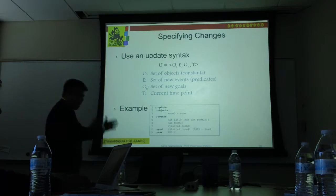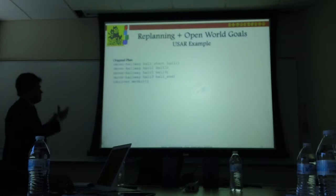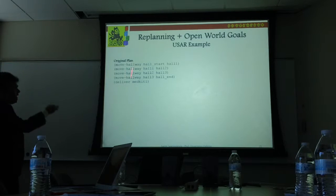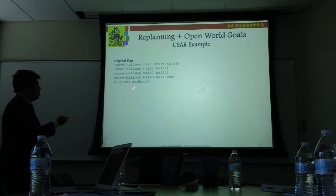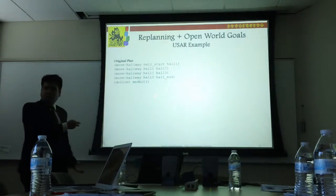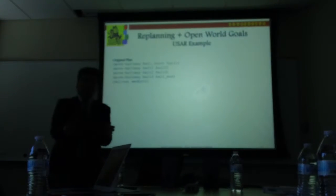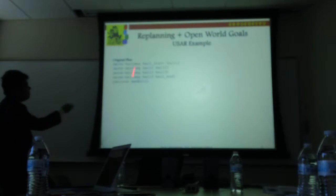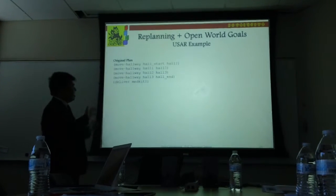Now I'll put replanning and open-world quantified goals together in an example from the search and rescue domain. The robot's initial goal was: it's given a medkit, and the commander tells it to deliver the medkit at the end of the hallway — a building that might collapse, so you don't want to send humans in. The original plan was to move through the hallway, reach the end, and deliver the medical kit.